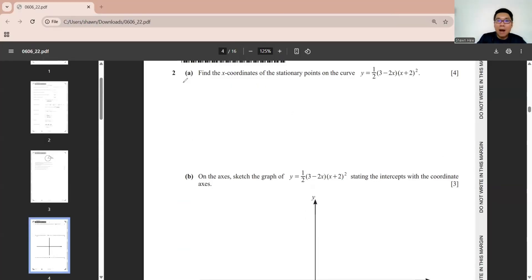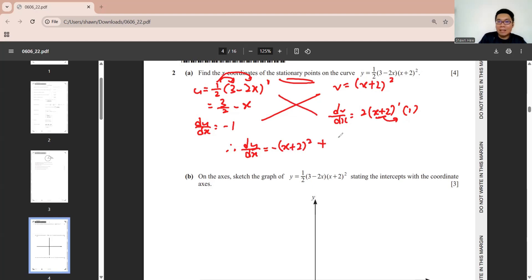Second question. Part A is under differentiation. Find stationary point. Part 2 is under the cubic graph. So we start the first part. u and v. Since this one is power 1, so I just expand it. Then du/dx is negative 1. Then we can find our dy/dx. This times this, plus this times this. Stationary point means dy/dx equal to 0. We do factorization to solve this.